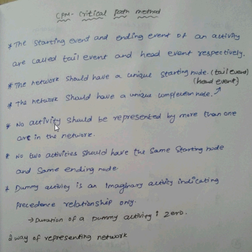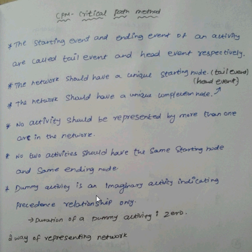The next point is: an activity should be represented by more than one arc in the network. Two activities should not have the same starting node and ending node. A dummy activity is an imaginary activity, and its duration is zero.